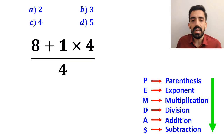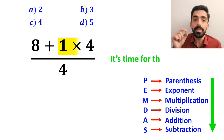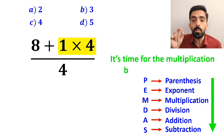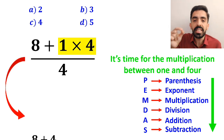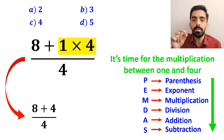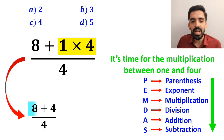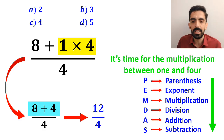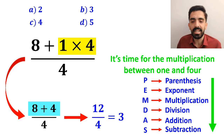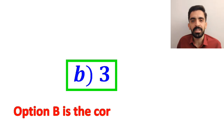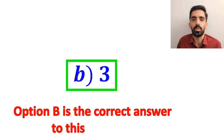In the next step, it's time for the multiplication between 1 and 4, which simplifies the expression to 8 plus 4 over 4. Finally, we handle the addition in the numerator, simplifying the expression to 12 over 4, which ultimately gives us the answer 3. Therefore, option B is the correct answer to this question.